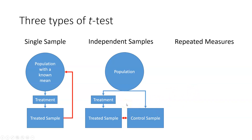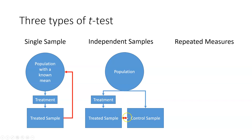I do want to note that sometimes an independent samples t-test won't look exactly like this. Sometimes you might have two treated groups instead of one treatment and one control — for example, like we learned about with the Atkins diet versus the Weight Watchers diet. Sometimes you use two treated groups and compare them to each other to see if the treated populations would be different.